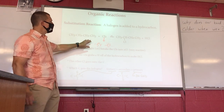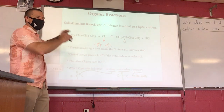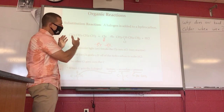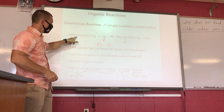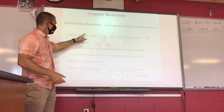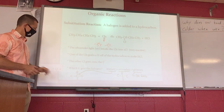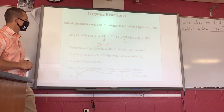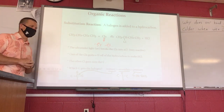The halogen is more likely to go in the middle of the molecule, though you will get a mixture of products — some Cl on the end carbon, some on carbon number two. In summary: in a substitution reaction, one of the hydrogens gets replaced — also known as substituted — by a halogen.